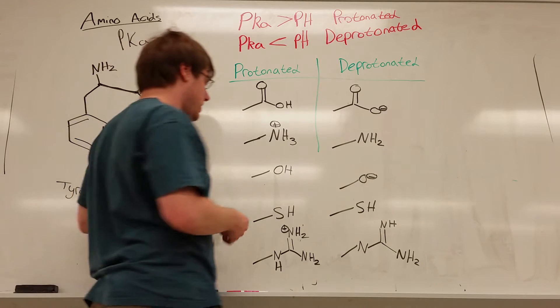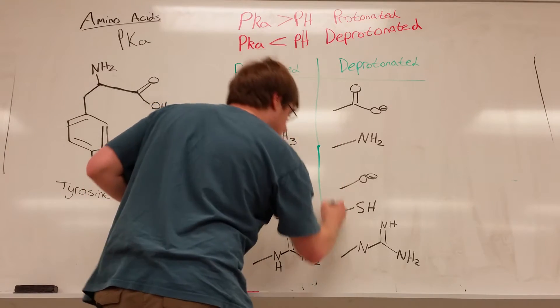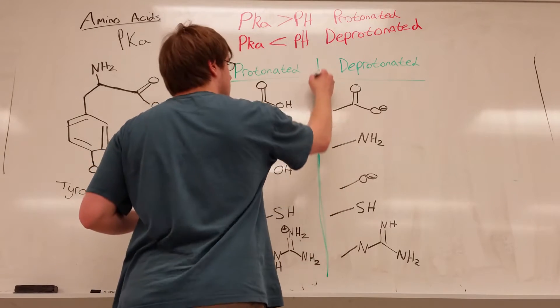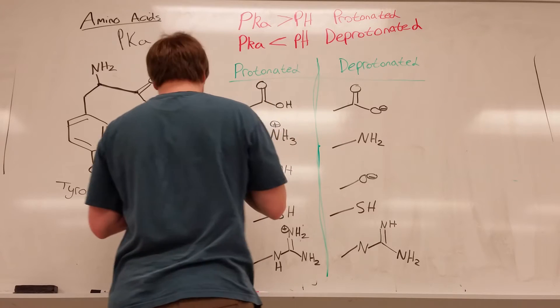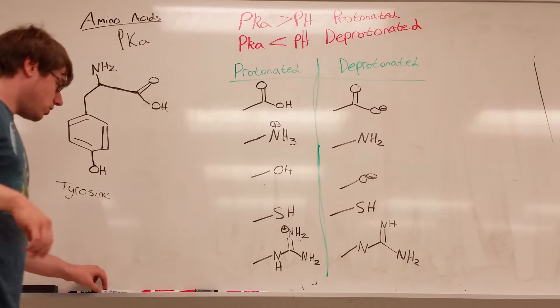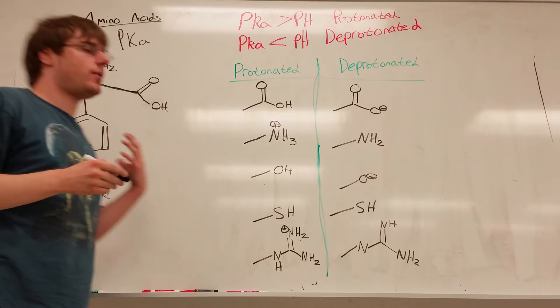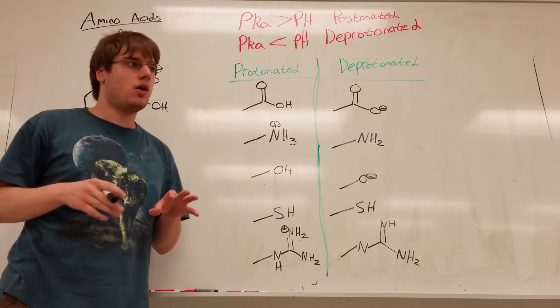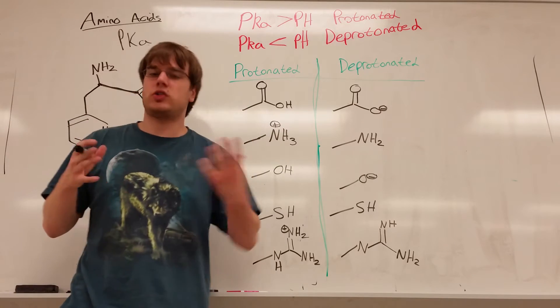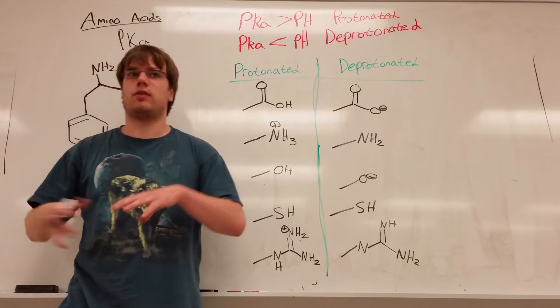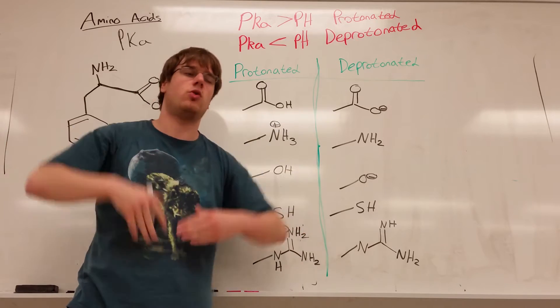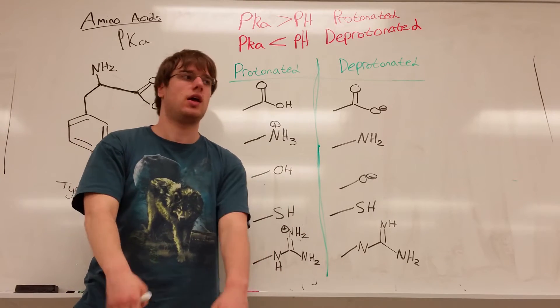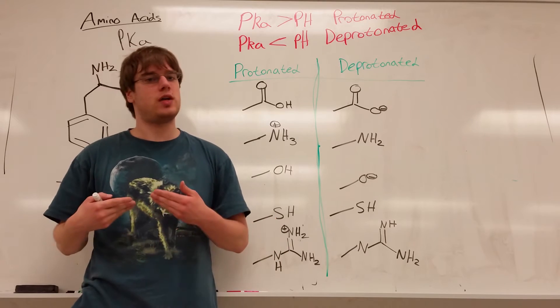Now, how do amino acids and pHs, what kind of questions can they ask about that? To explain this concept, we have to talk about something called pKa. When you hear the word pH, you think about a solution and how acidic it is. If you have a pH of 7, you're neutral, but as you go to a lower pH, you become more acidic, and as you get a higher pH, you become more basic.